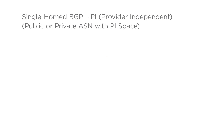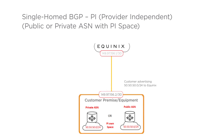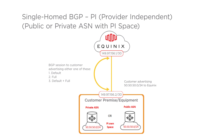Single-homed BGP PI, provider-independent, with public or private ASN and PI space, most common for backup or secondary internet access. This customer has their own PI space, and their own subnet has to be greater than or equal to slash 24. They either have their own public ASN or are using a private ASN with an LOA assigned by Equinix. Equinix provides an IPv4 slash 30 or IPv6 slash 126 for configuration. BGP policy is used to select default routes, full routes, or default plus full routes.